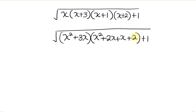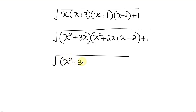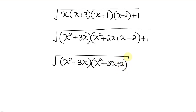Now let's simplify what we have inside of this bracket. So this will be the square root of x squared plus 3x, times x squared plus 2x plus x is 3x, and then plus 2. And outside of the bracket we have plus 1.